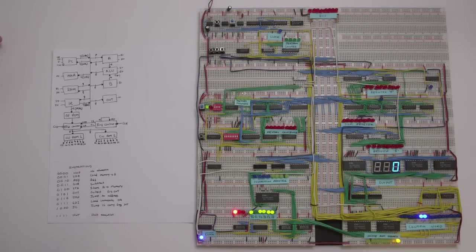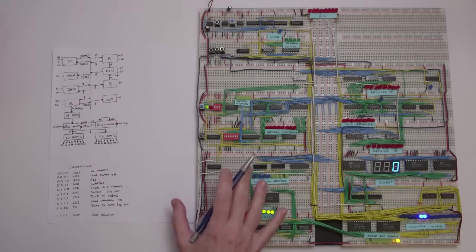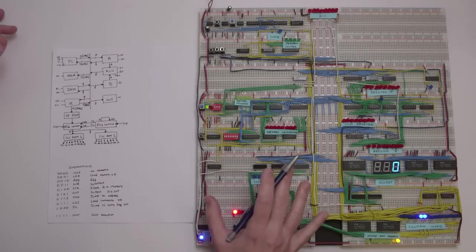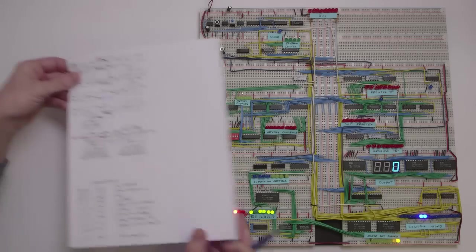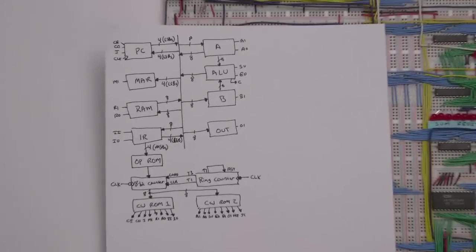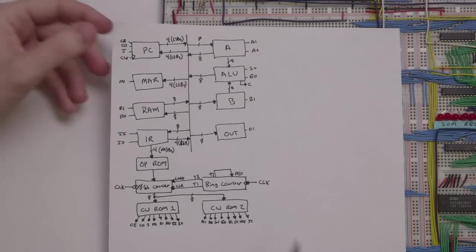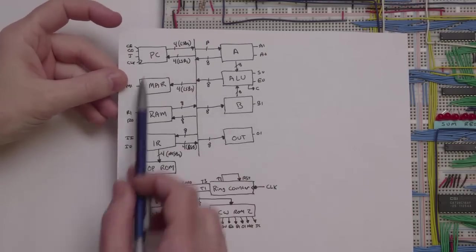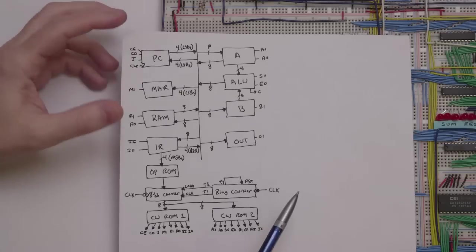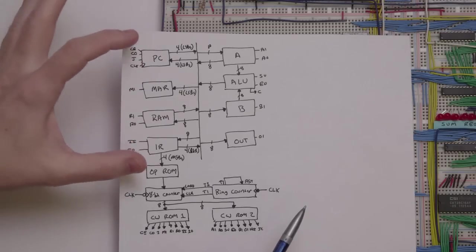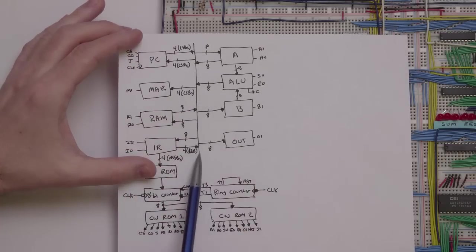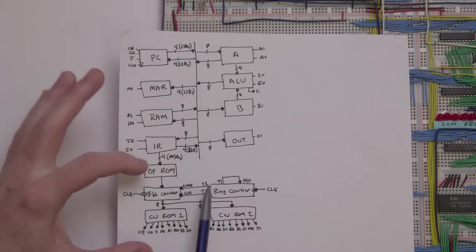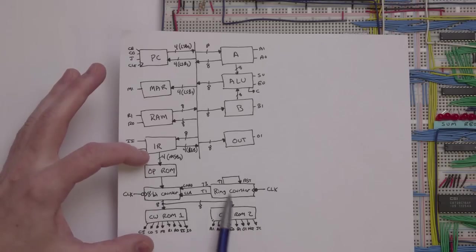In this video, I want to show you how we write a very simple program and program this computer and then run that program. Before we do that, I want to start by looking at the architecture of the computer in a little bit more detail. This is the architecture of the computer, and it's broken into two sections. The top section is organized around this central 8-bit bus, and the bottom section is the control logic.